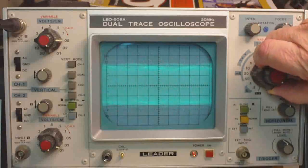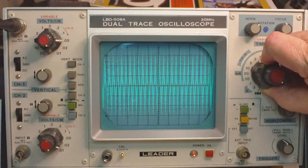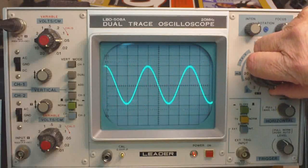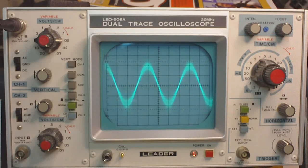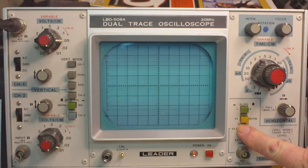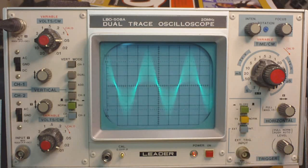Again, if we want to see the carrier at 455, increase the time base. And this is without sync. It would be almost impossible to use the scope this effectively without the internal sync.